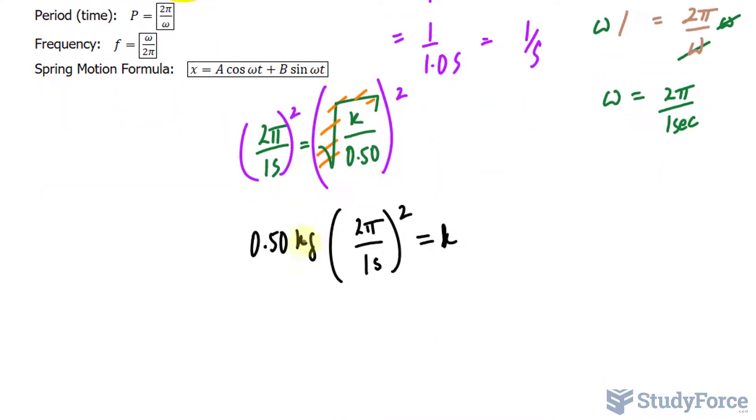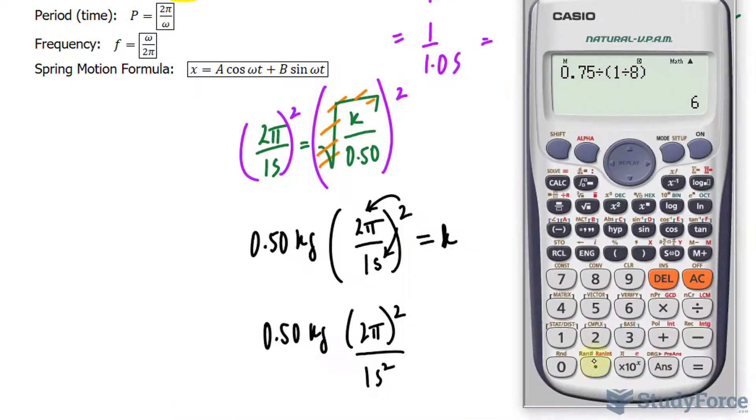Let's look at the units here. We have 0.50 kilograms. This 2 gets distributed to the top and bottom, so we have 2π to the power of 2 over 1 second squared. Let's use our calculator: 0.5 times 2π squared equals 19.739. I'll round this to two significant figures because 0.50 has two significant figures.